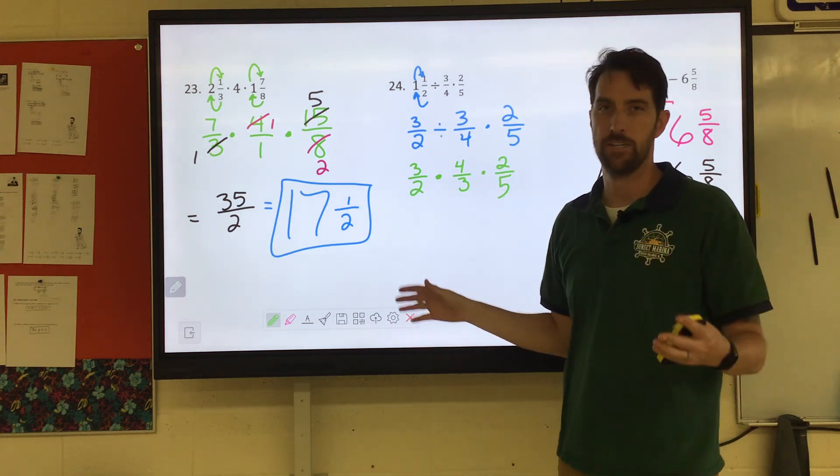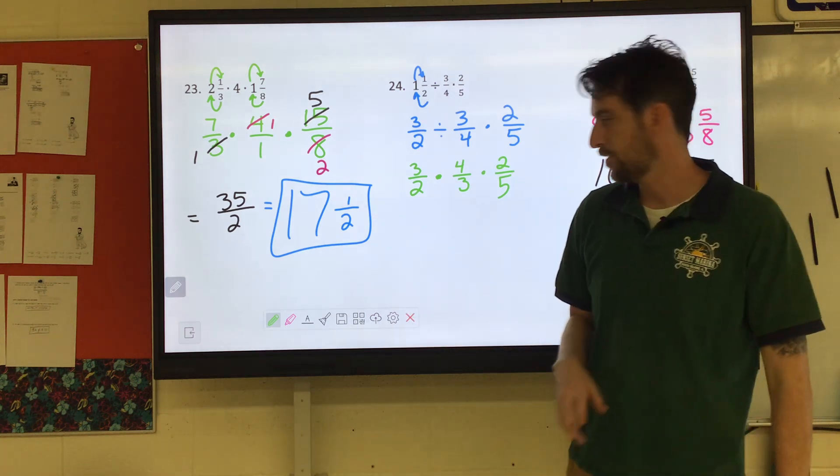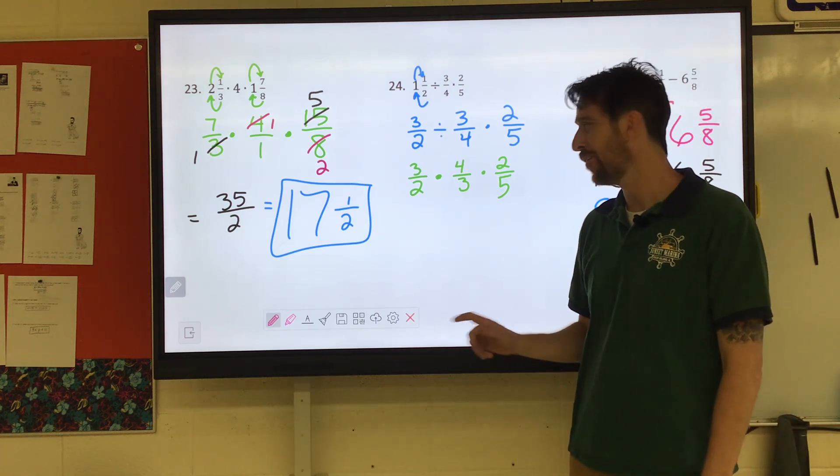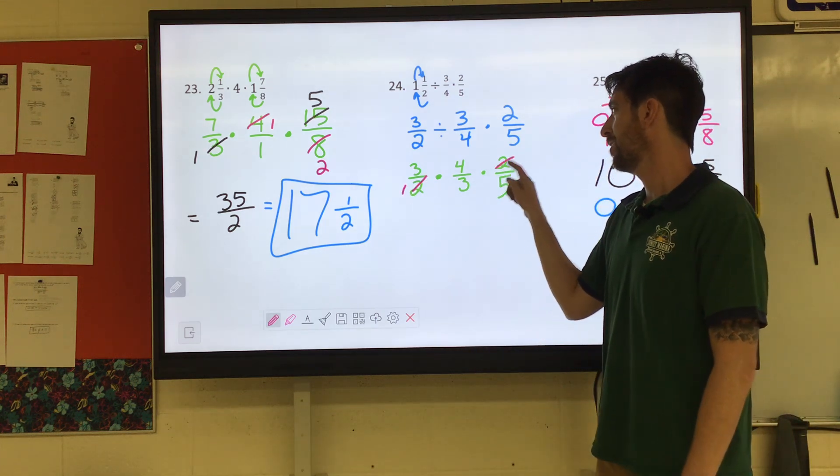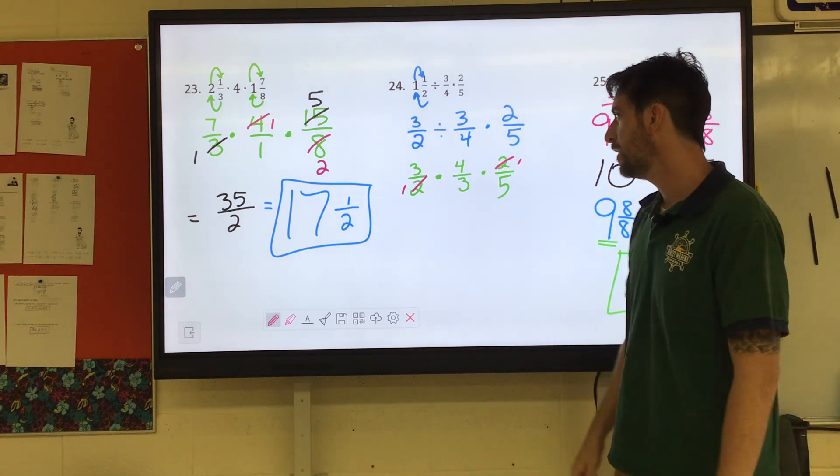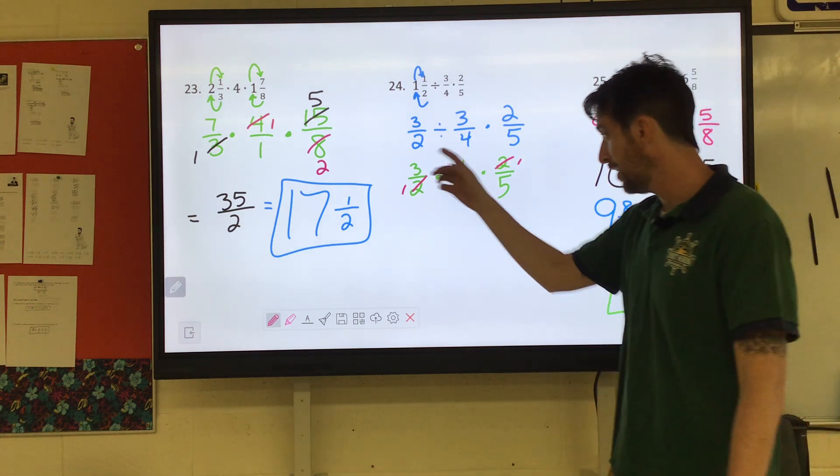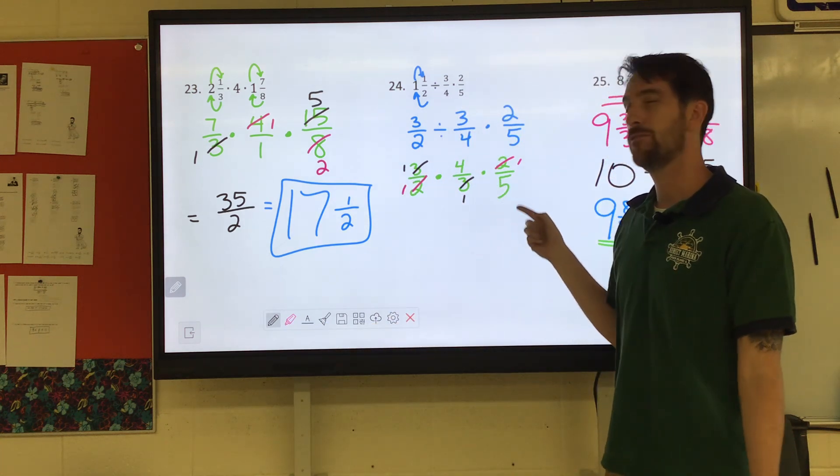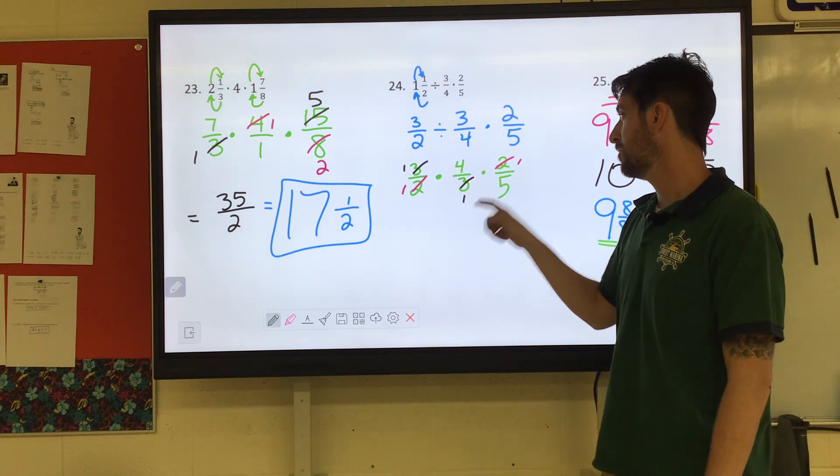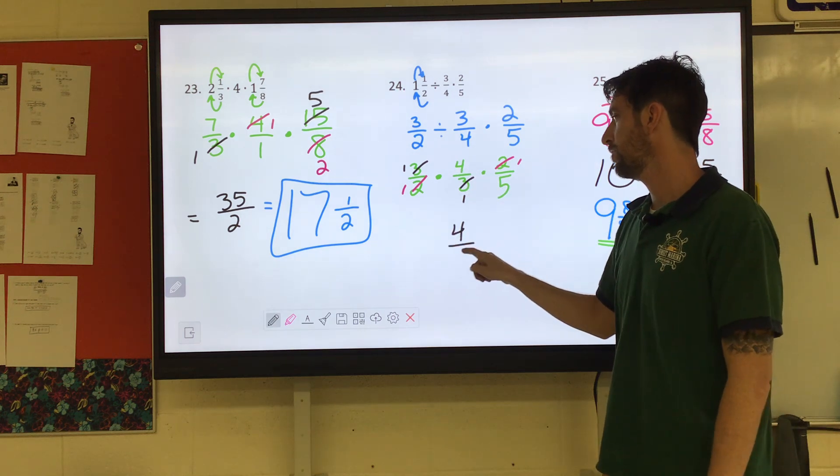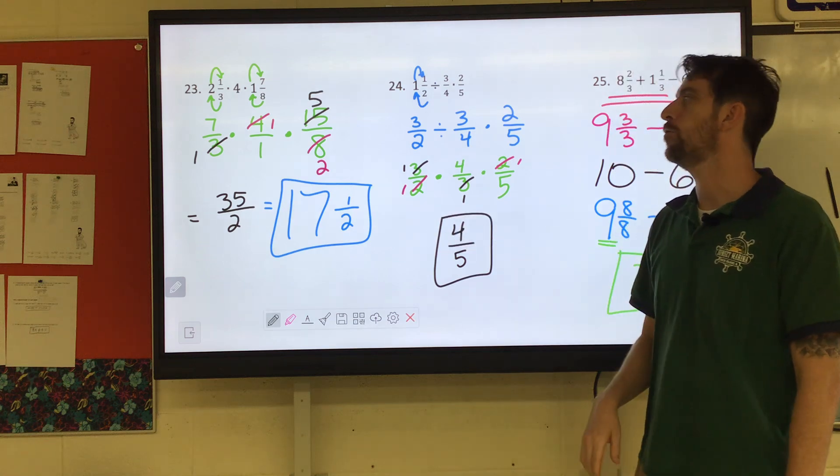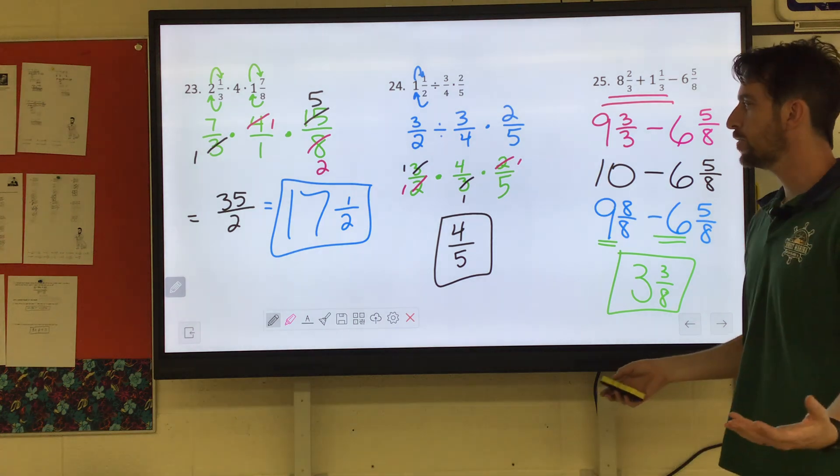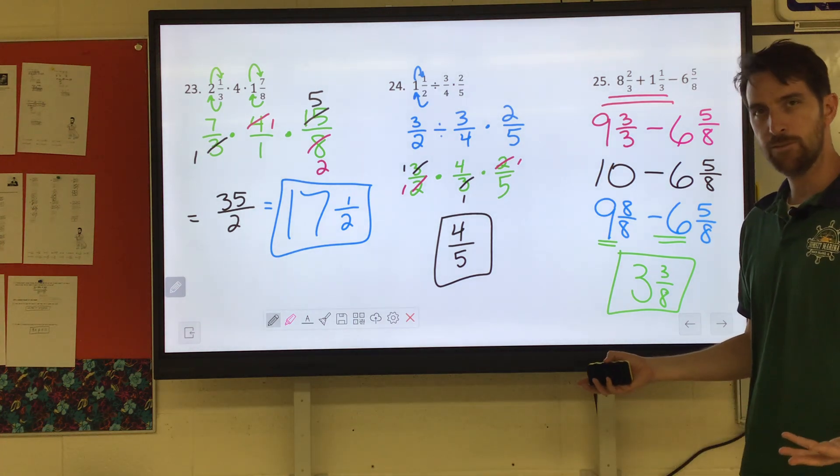So now it is a multiplication problem. Do you notice anything that we can simplify? And you're looking at that and you're like, yeah dude, I see a two and a two. Get rid of them. Cancel out a two for a two. Anything else like that you see? I see a three and a three. Four and five, do they have anything in common? No. So we just have four fifths. That wasn't too bad. I thought number 23 was way worse than that. All right. So we got three done. Let's keep this party moving.